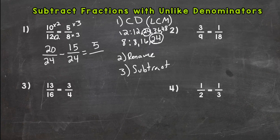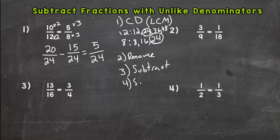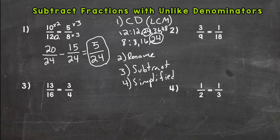Now our last step after we rename, we subtract. 20 minus 15 is 5, keep your common denominator which is 24, and then you check if it can be simplified. Just like the addition video, none of these can be simplified out of these four problems because we're just working on the process of subtracting. 5 and 24, the only common factor is 1, so we are done. 5/24.